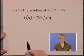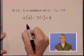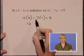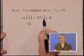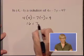We'll simplify the left hand side. 4 times 4 is 16. We have a negative 7 times a negative 1, which gives us a positive 7.